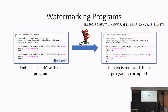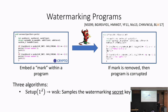More precisely, there are three main algorithms we consider when designing watermarking schemes. First, there's a setup algorithm that samples a watermarking key — a key that will be used both to embed watermarks within programs and to detect whether a program is watermarked or not.